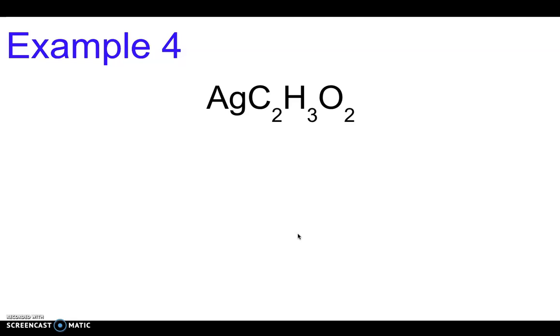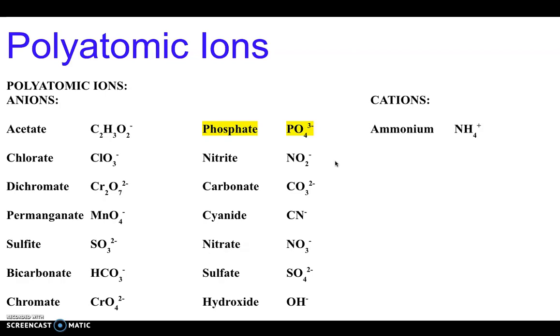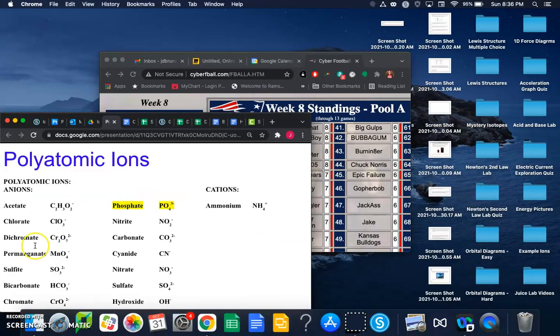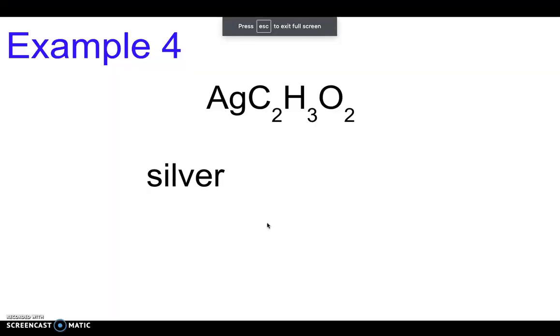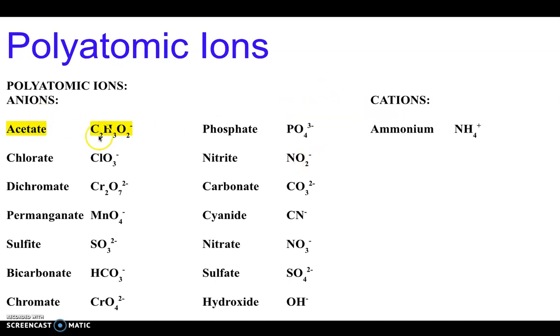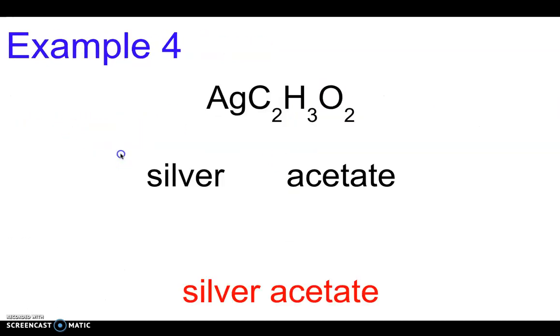Next we're going to be writing the name for this. Ag is silver, C2H3O2 is acetate. This is just silver acetate.